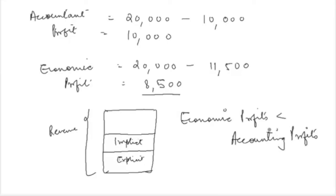The net profit that an economist considers from the 10,000 rupees is actually 8,500 rupees. Although in terms of money received you get 10,000 rupees, an economist perceives it as 8,500 because the economist wants to cover the opportunity cost as well — the 1,500 rupees that Caroline is losing by running her own business. So the effective profit to an economist is 8,500 rather than 10,000.